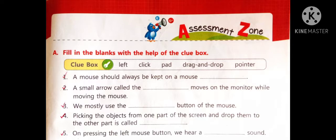A mouse should always be kept on a mouse dash. The answer is pad. Two number. A small arrow called the dash moves on the monitor while moving the mouse. The correct option is pointer.